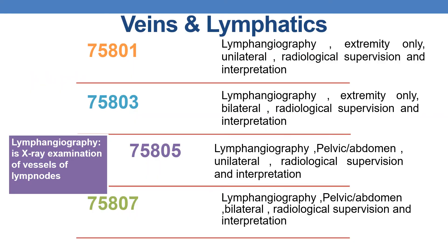Now let us discuss the CPT codes. CPT 75801 is lymphangiography, extremity only, unilateral, radiological supervision and interpretation. CPT 75803 is lymphangiography, extremity only, bilateral, radiological supervision and interpretation. CPT 75805 is lymphangiography, pelvis or abdomen, unilateral, radiological supervision and interpretation.